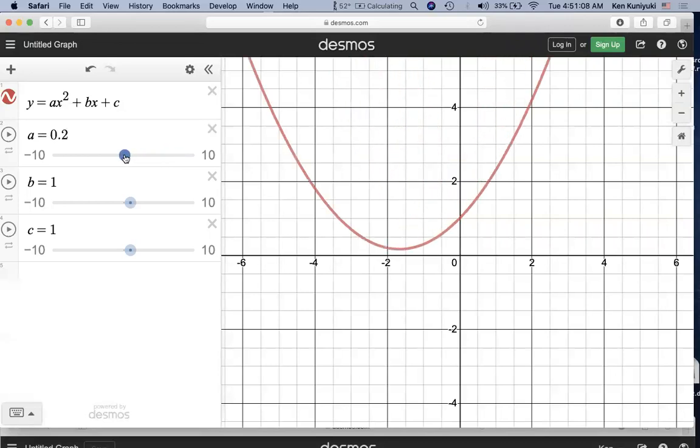If a is zero, then we get a line. That's not a parabola. If a is negative, it opens downward. But as we move away from zero, again, the parabola gets steeper and steeper.